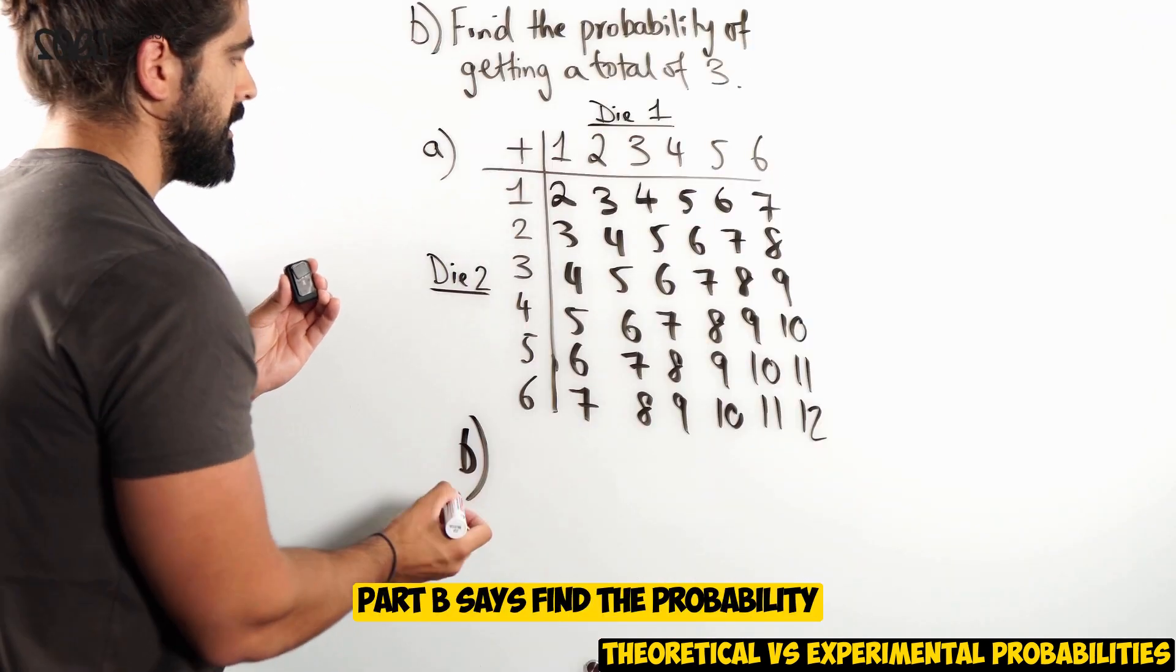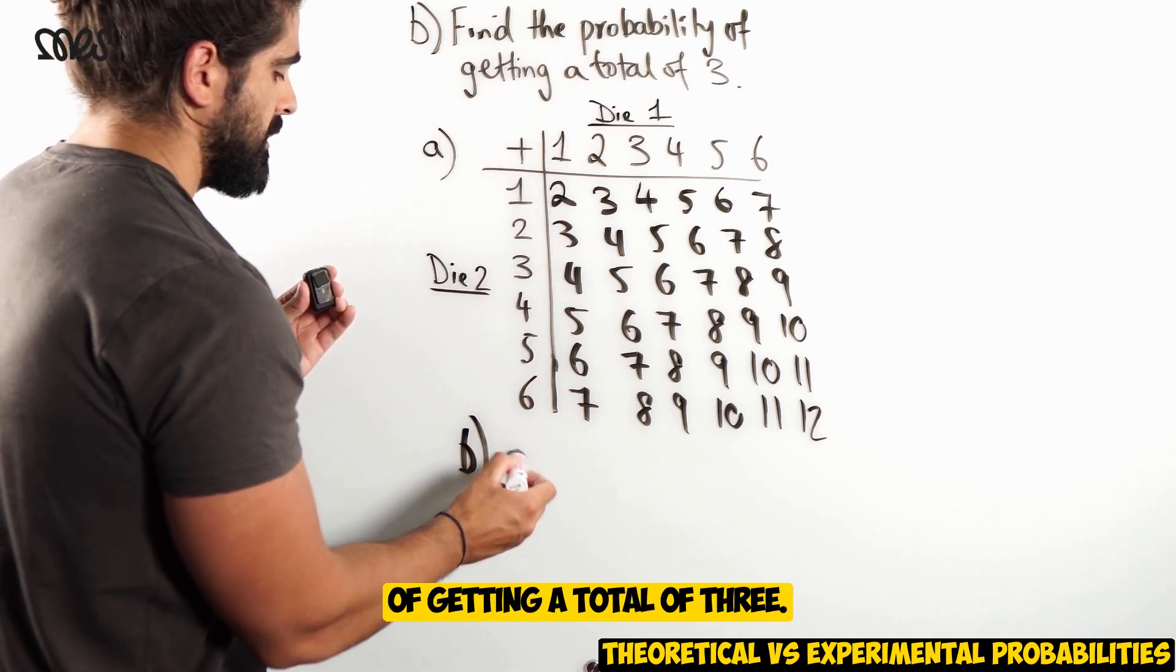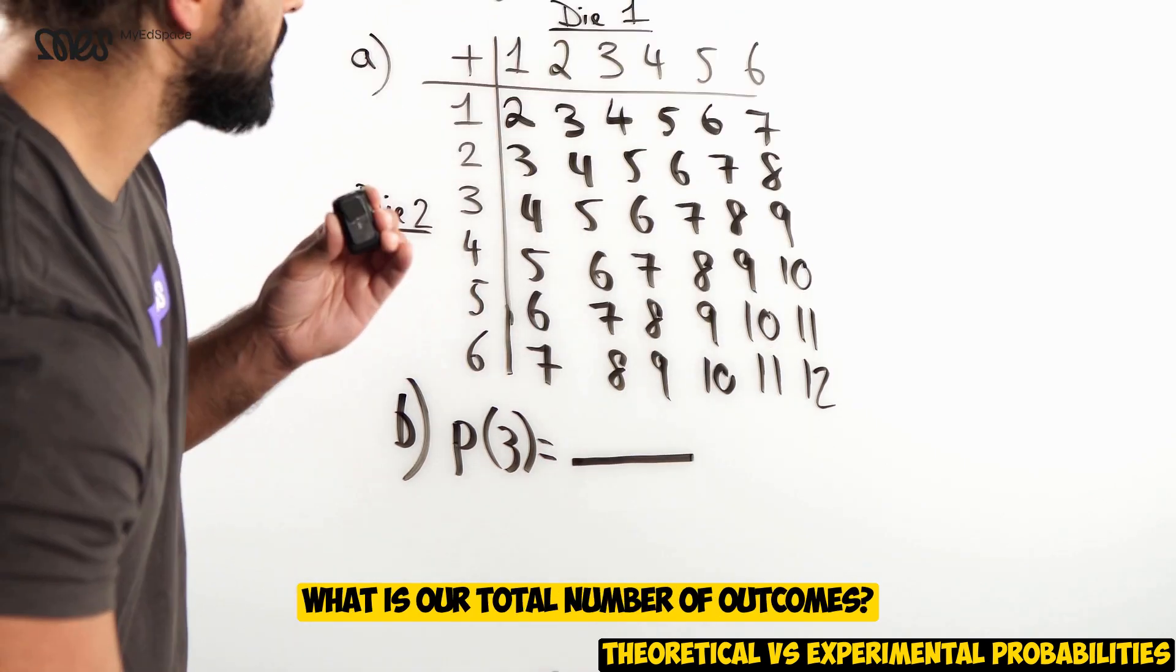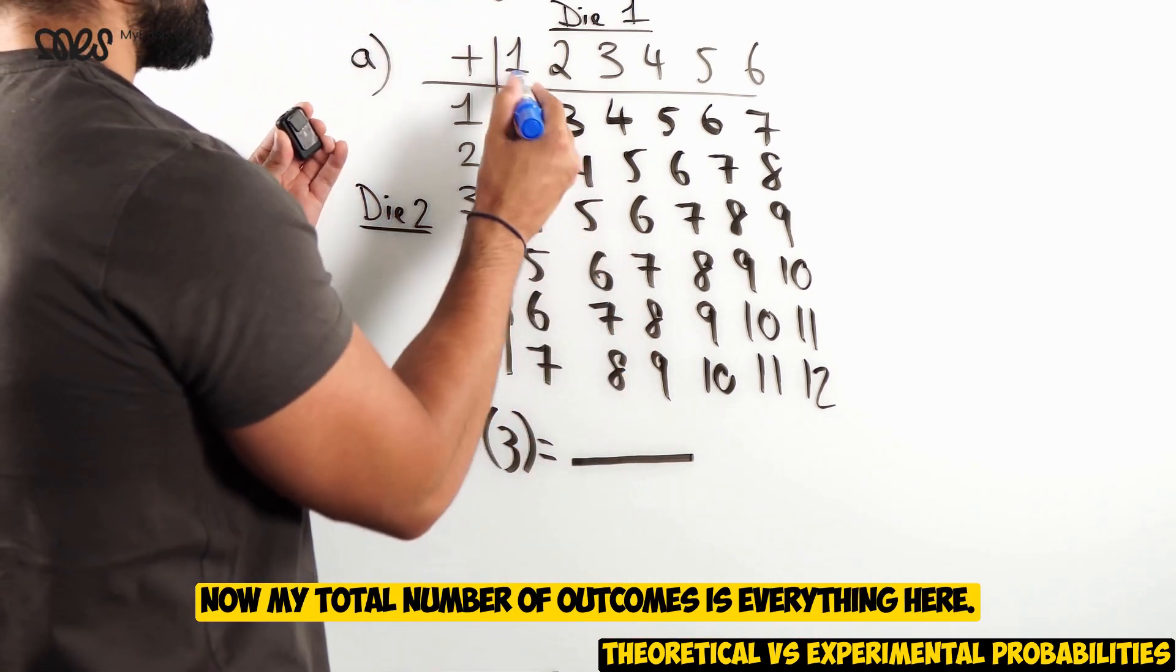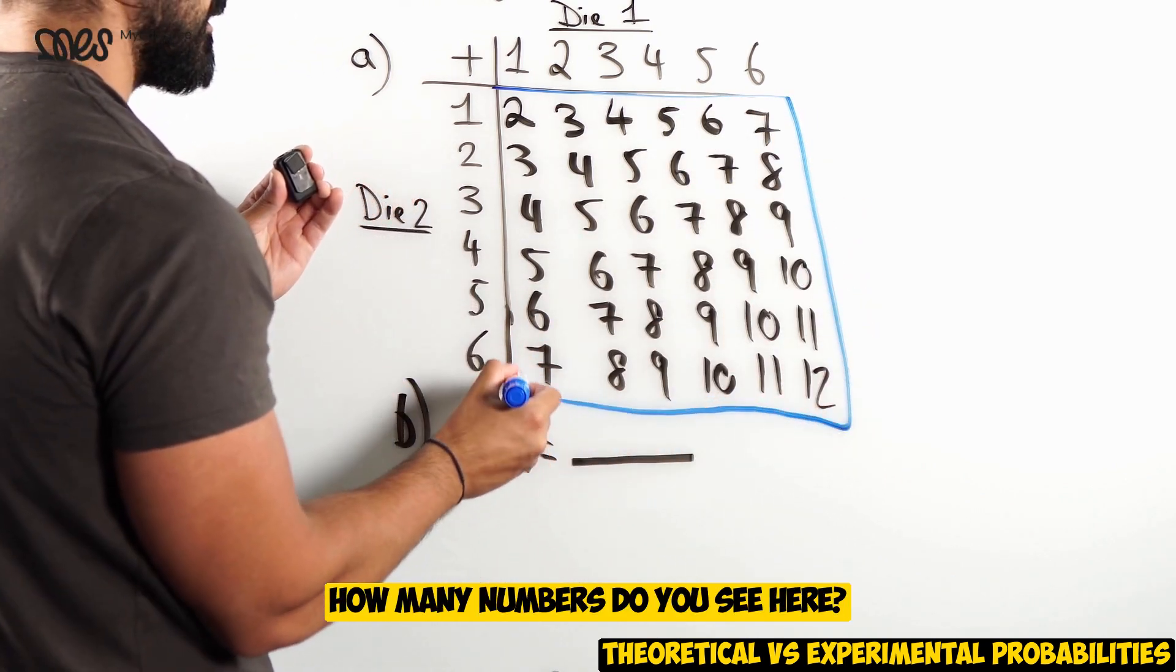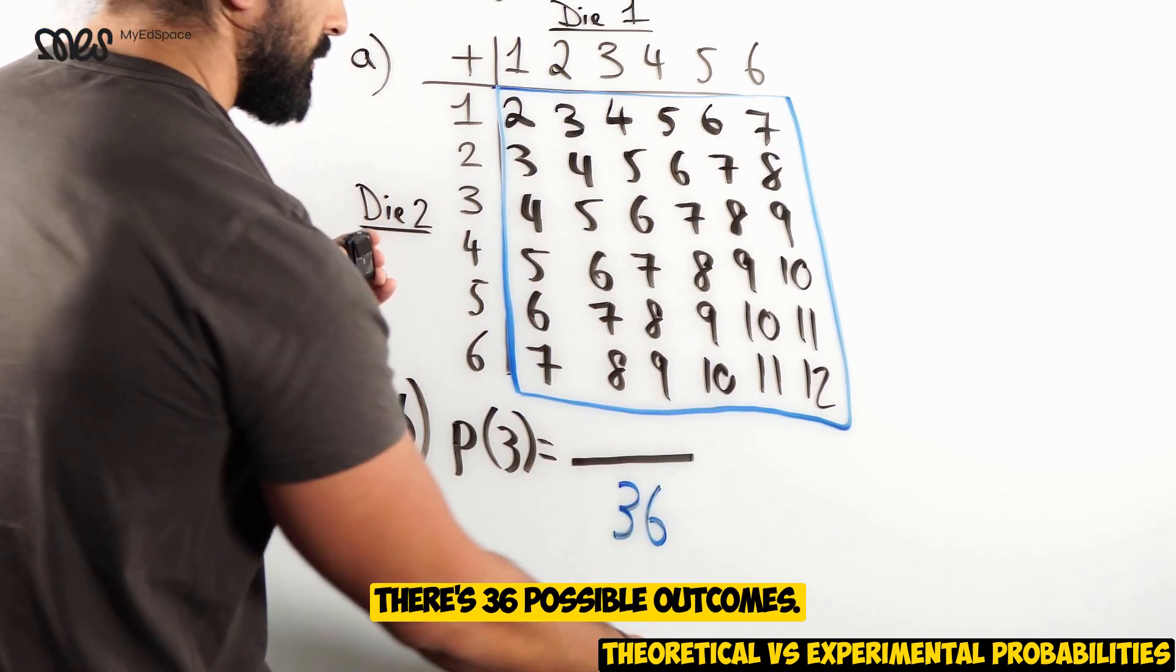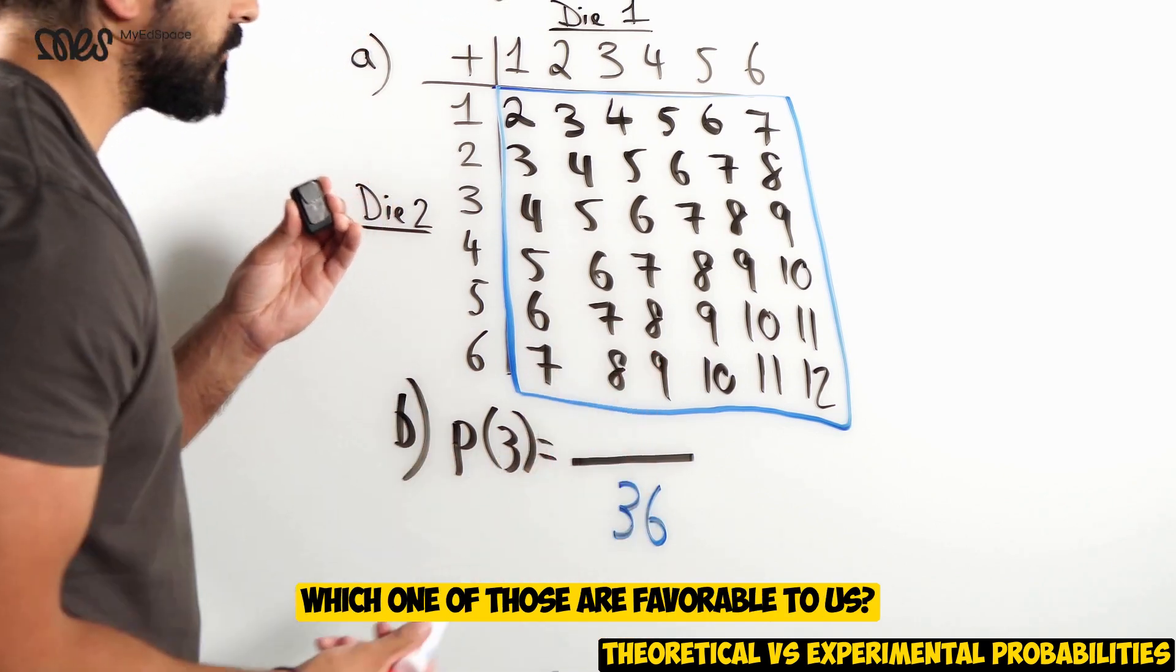Part B says, find the probability of getting a total of 3. What's the probability of getting a 3? Remember, I said division. And we're saying, what is our total number of outcomes? Now, my total number of outcomes is everything here. How many numbers do you see here? Well, you can quickly do it by saying it's a 6 by 6. There's 36 possible outcomes.